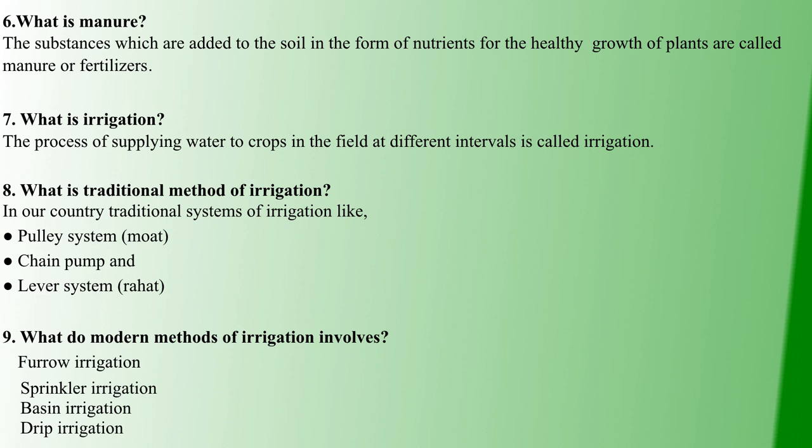Next question: What is Irrigation? Irrigation is the water supply to crops at different intervals. Methods of irrigation include the Pulley system, Chain pump, and Lever system. In India, these three types are the most famous traditional irrigation methods.